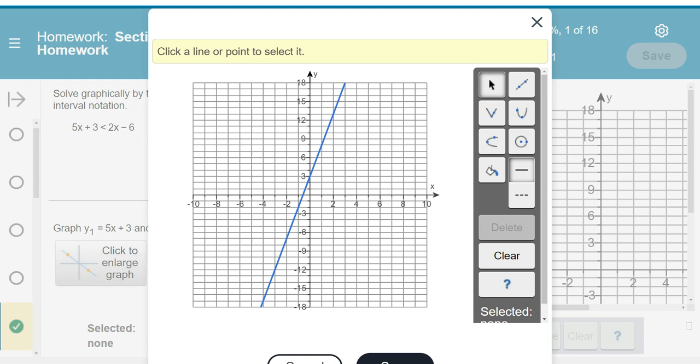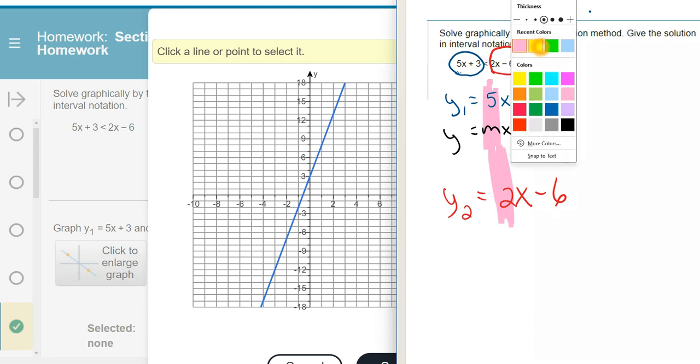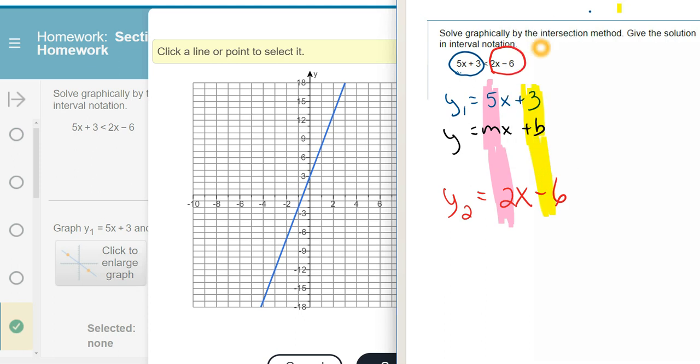Now, the other equation that we're going to do is the right side, and that's going to be this one here. So this is my y sub 2. And once again, your slope, this is your slope, right? And this is your y-intercept.